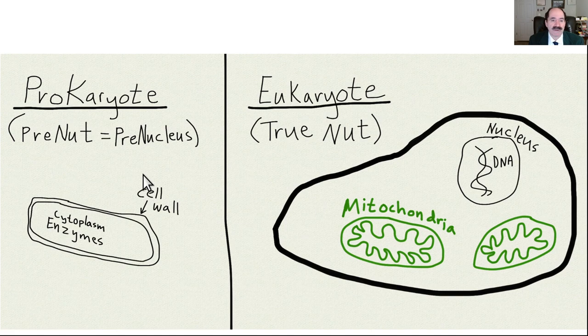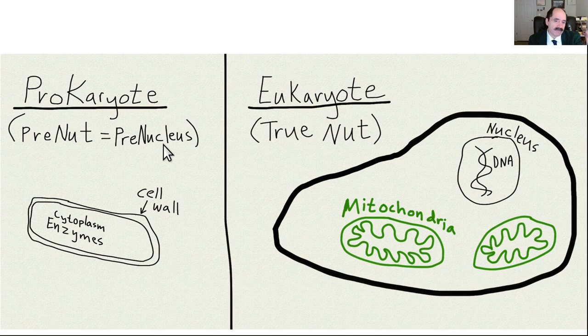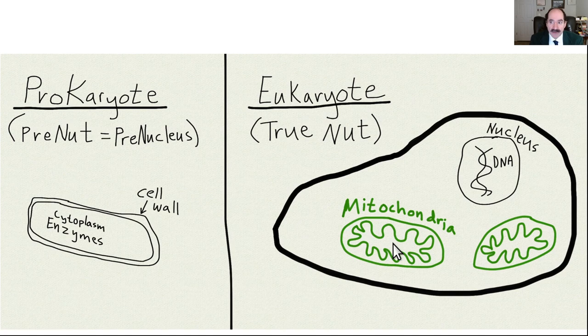There are two main categories of cells. One is called prokaryote — 'pro' means pre and 'karyote' means nut in Greek, so it means pre-nucleus. This is what all students are taught in college, high school, and med school biology. The other is eukaryote — 'eu' means true in Greek, so eukaryote means true nucleus. But that is not the main point. What you really need to know is that the eukaryote cell has mitochondria.